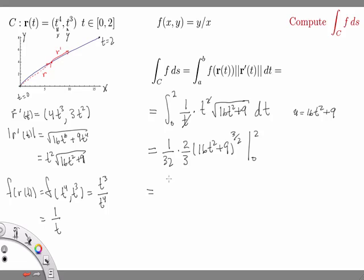I get 1 over 48, and when I plug in t equals 2 I get 64 plus 9 is 73 to the 3 halves. Then minus when I plug in 0 I get 9, and 9 to the 3 halves—the square root of 9 is 3 and cubed is 27.